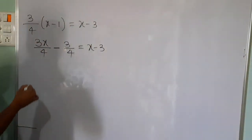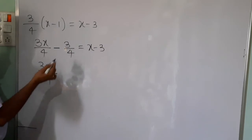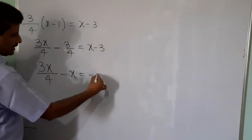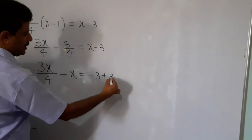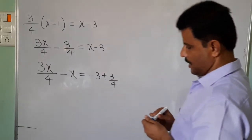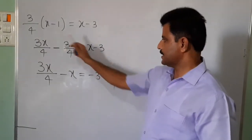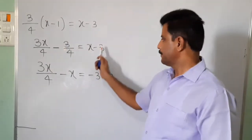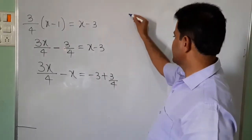Variables: 3x by 4 on the left side. Plus x — send x from the right side to the left, so minus x. So we have 3x by 4 minus x. Constants: minus 3 on the right side, and send minus 3 by 4 to the right — plus changes to plus 3 by 4. So the right side becomes minus 3 plus 3 by 4. I am grouping variables on one side and constant terms on the other side.